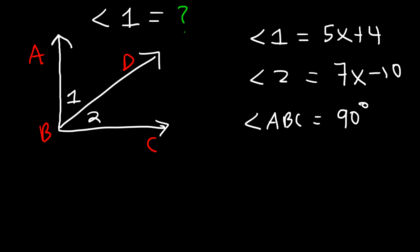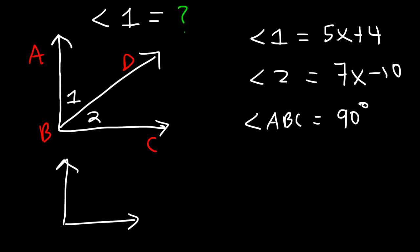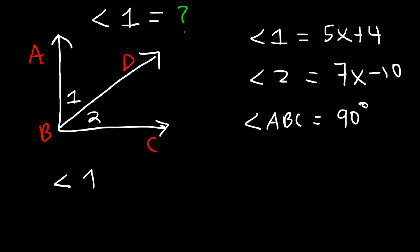Let's draw angle ABC again. If angle 1 is 40 degrees, then angle 2 would be 50 degrees, because they have to add up to 90. So angle 1 plus angle 2 equals 90. Whenever two angles add up to 90, those angles are called complementary angles.